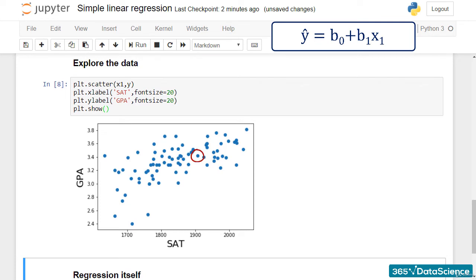For instance, this is a student who scored around 1900 on the SAT and graduated with a 3.4 GPA. Observing all data points, we can see that there is a strong relationship between SAT and GPA.